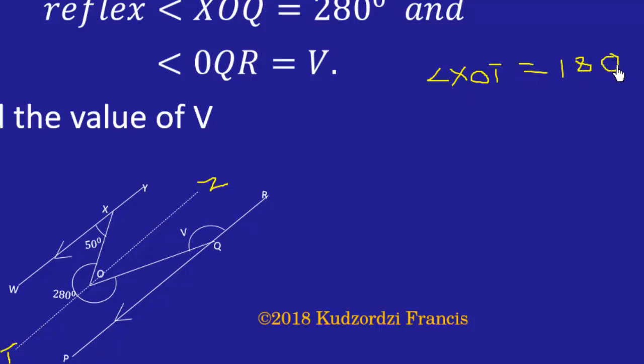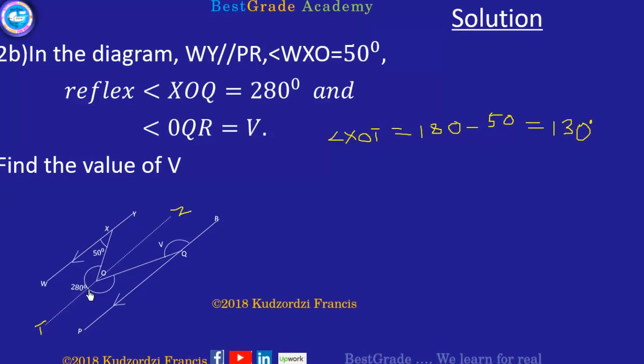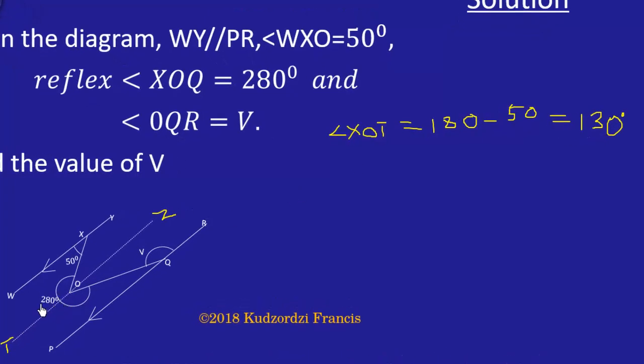And that is equal to 130 degrees. Now we know this angle, so we can find this one over here, which is angle QOT. This angle over here is equal to 280 minus 130, and that will be equal to 150 degrees.